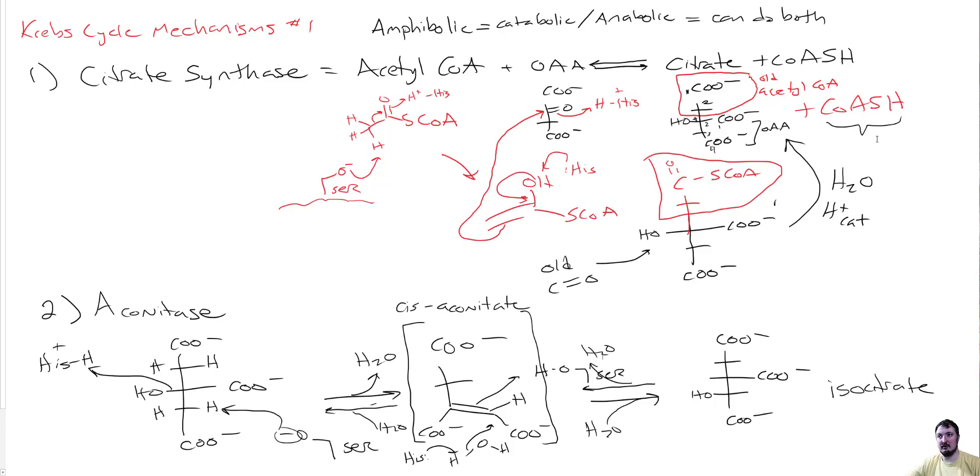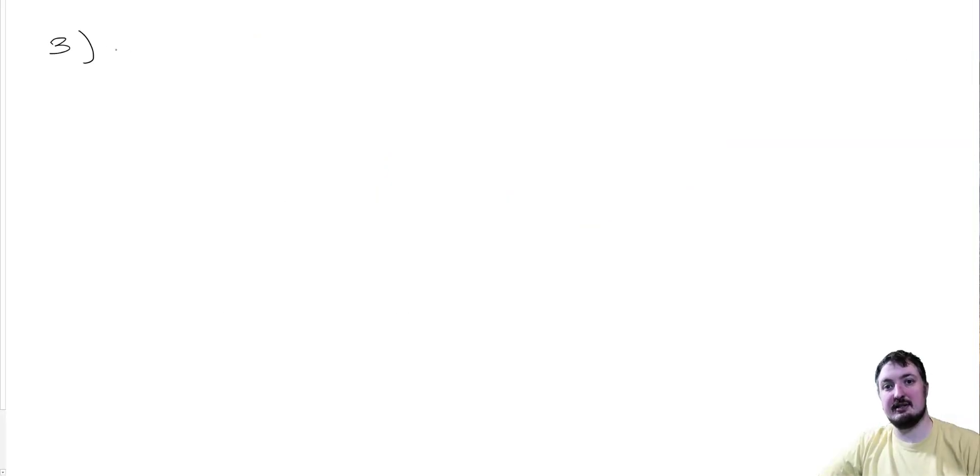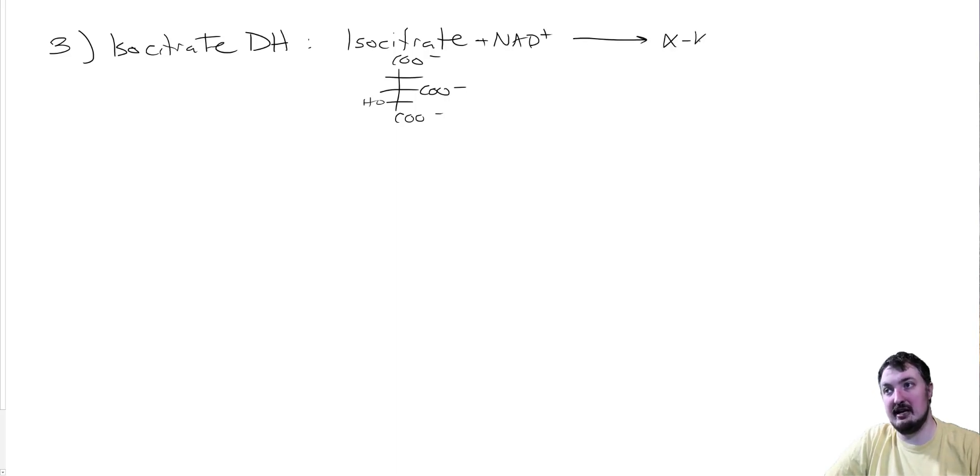Number three is isocitrate dehydrogenase. Isocitrate dehydrogenase takes isocitrate and NAD and forms alpha-ketoglutarate. We make an NADH at this point. We're going to be losing this side chain CO2 as a group. And we're going to be oxidizing that OH down towards the bottom of the molecule into a ketone.